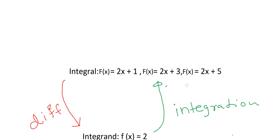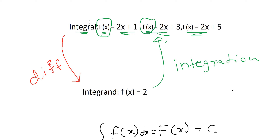Let's look at some numerical examples. The original function could be 2x plus 1, or 2x plus 3, or 2x plus 5. Remember that capital F of x is used to denote the original function in this chapter. Capital F of x denotes the integral and denotes the original function, so please get used to these terminologies.